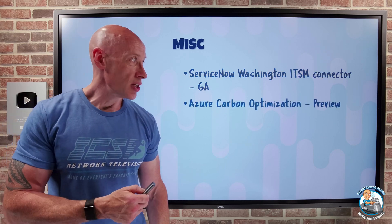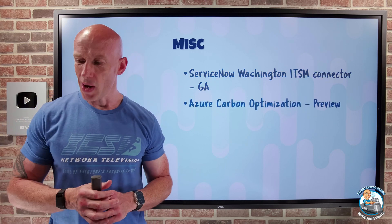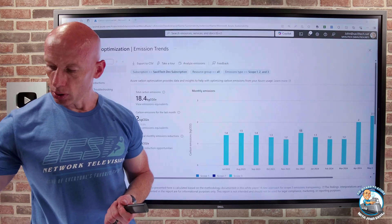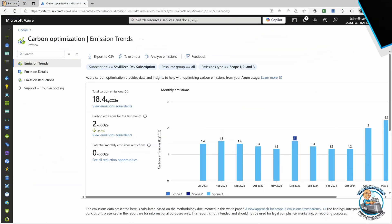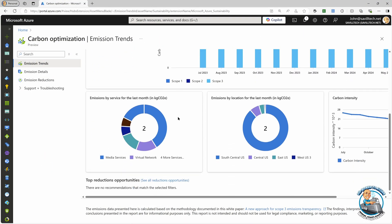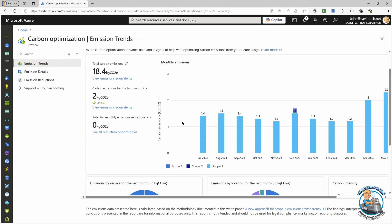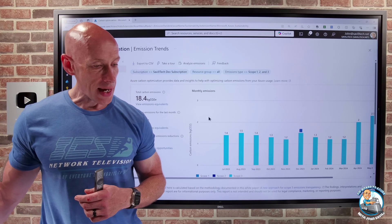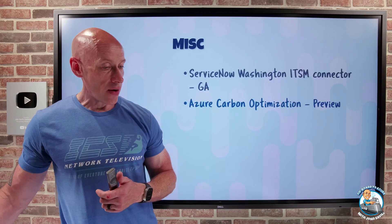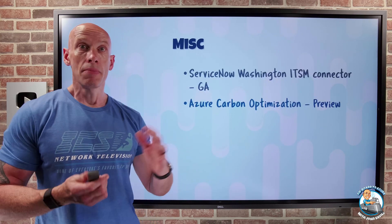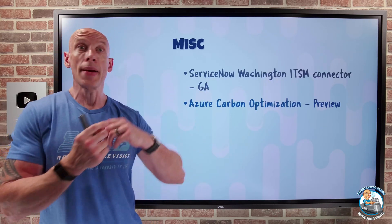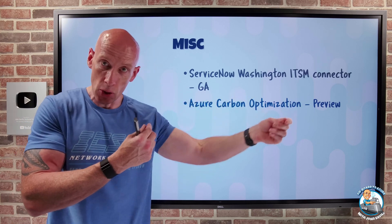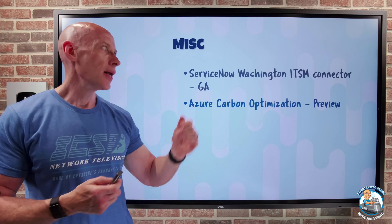Azure Carbon Optimization is now in general preview for everyone. You can search for Carbon Optimization in the portal — it helps you track the carbon footprint of your resources. Many companies have goals around this today, so it can help you decide which types of resources to use, consolidate workloads, or track offsets such as carbon compensation programs.